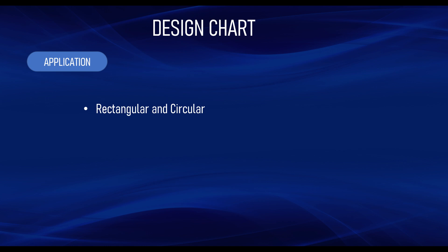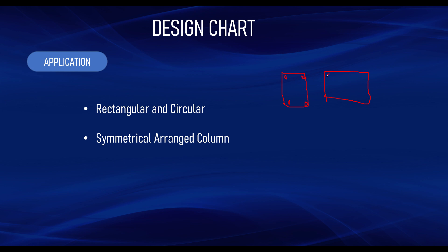Another important condition is that the design chart is for symmetrically arranged columns. At construction sites, reinforcement is designed and detailed so that it is symmetrically arranged — meaning you have the same number of reinforcement bars at each face of the column. For example, if you have two bars at one corner, you must have two bars at the opposite corner. If reinforcement is not symmetrically arranged, you cannot use the design chart.